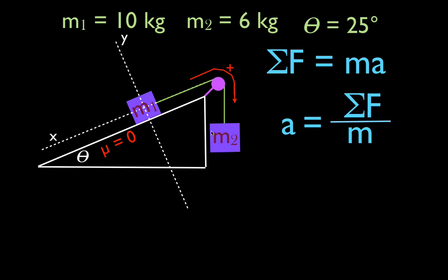I don't actually know yet which way these two objects are going to accelerate — whether M2 goes down and M1 goes up the plane, or vice versa. We'll figure that out from the sign of the acceleration. Now we can draw in the forces. First, M1g — the gravitational force straight down. Second, M2g — straight down. There is a tension force acting upward (negative direction) for M2, and a tension force acting up the ramp (positive direction) for M1.